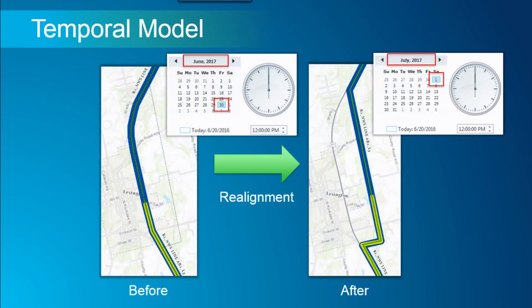Our data is temporal. The networks, events, and calibration points all have from and to dates, making them time-aware data. You can go back in time or move forward in time to see a representation of what your network and events looked like at any point.